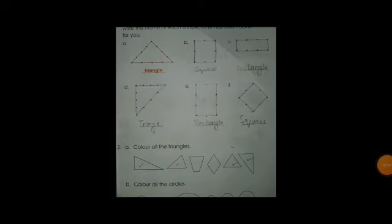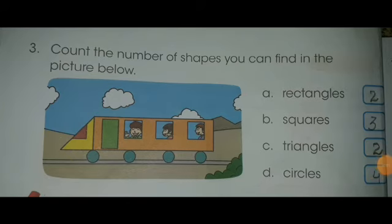Students, now we will solve the exercise given on page number 91, which is related to pages 89 and 90. In the first question, you have to join the dots to form the shapes, then write their names. In question number 2, part A, color all the shapes. In question number 3, count the number of shapes you can find in the picture below, and write the number of each shape.